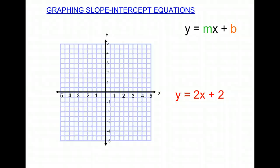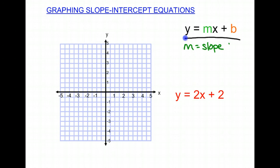Hello, today we'll be working on graphing with the slope-intercept equations. So here's our general formula: y equals mx plus b, where your m is going to be your slope, or your rise over run. And your b is going to be your y-intercept.